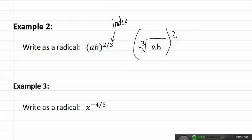Let's look at another example. Here, it asks us to write it as a radical once again. Once again, the denominator is the index. This means we have the fifth root.